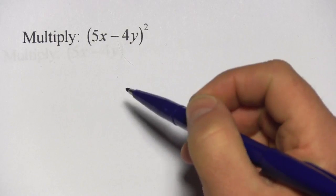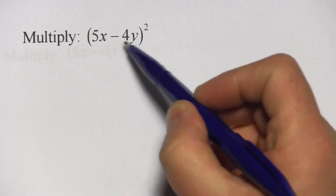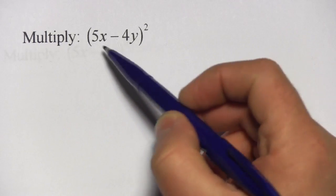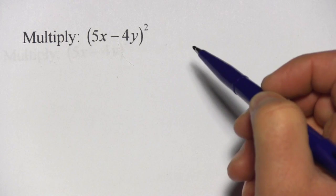In these problems we are multiplying polynomials. And what are polynomials? Well, there are these kinds of expressions in algebra where you have more than one term. We've got a 5x and we've got a negative 4y and we want to square it.